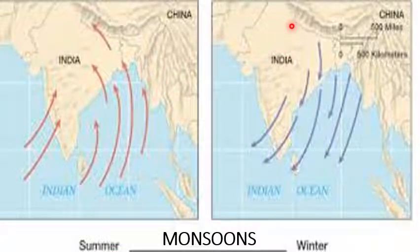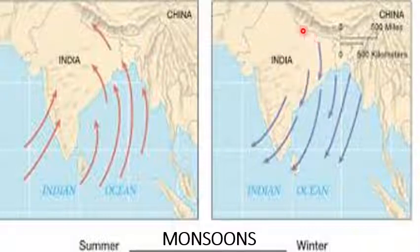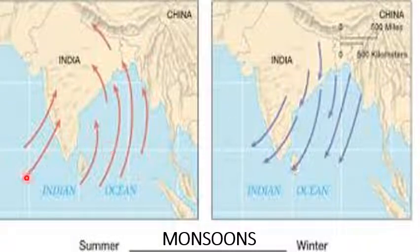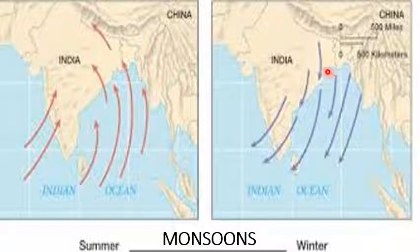During winter, the sun shifts towards the Tropic of Capricorn, so land becomes cooler — low temperature, high pressure. Water is still warmer — high temperature, low pressure. Hence, the winds blow from land to sea. Summer monsoon winds are hot and humid and will bring rainfall to the area where they reach, whereas winter monsoon winds are cool and dry as they blow from land to sea, so they will not bring rainfall.